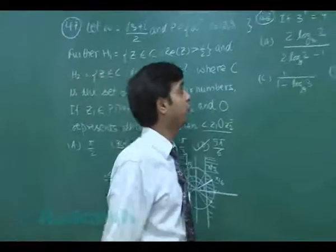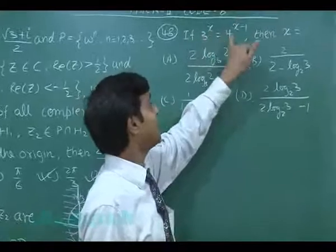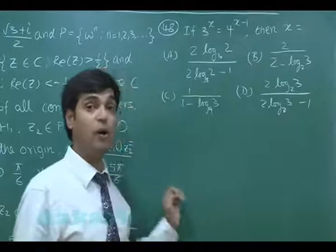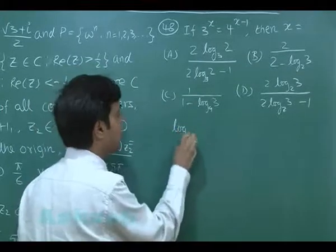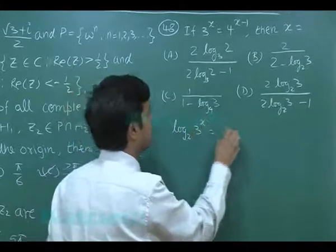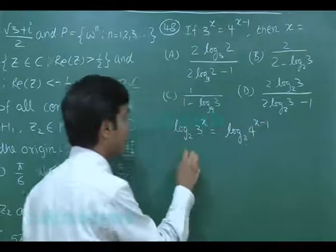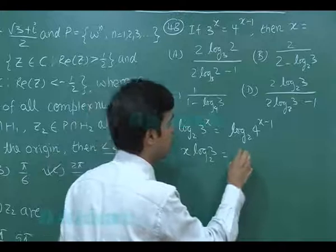Question number 48. Simple equation: if 3 to the power x equals 4 to the power x minus 1, then x equals. We have to find the value of x. Take log on both sides to the base 2.